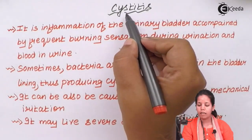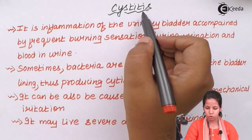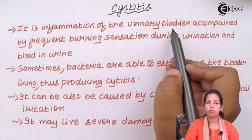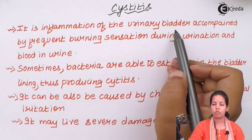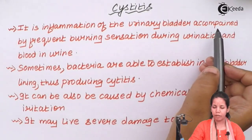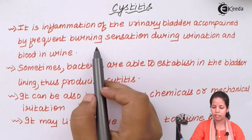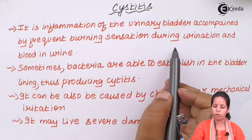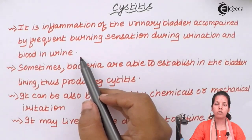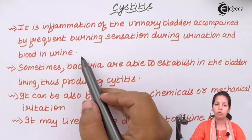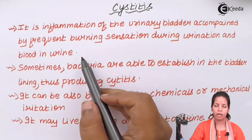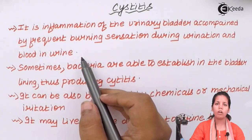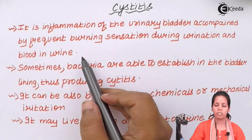Cystitis — 'itis' clearly means inflammation. It is the inflammation of your urinary bladder, the pouch or bag-like structure that holds urine. It is accompanied by a burning sensation during urination and a small amount of blood in urine, which is not a common phenomenon. Urine should never consist of sugars, glucose, or blood, as these are not products that should be filtered into urine. Their presence indicates either an infection or a condition in your excretory system.